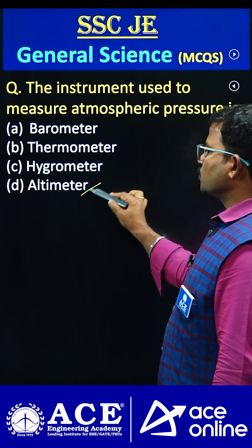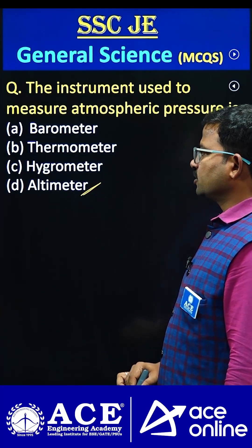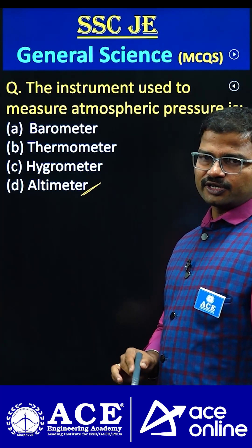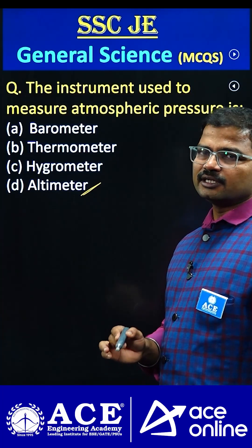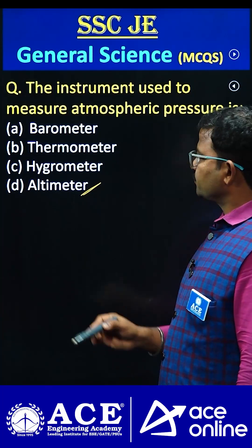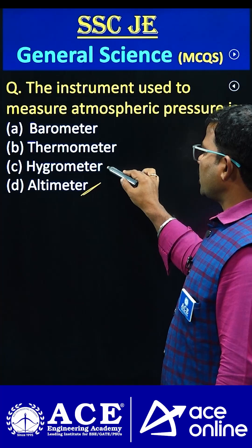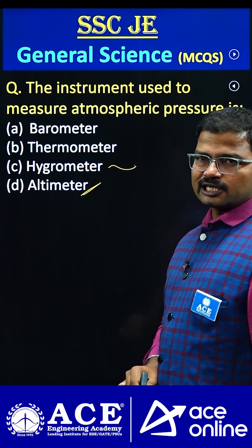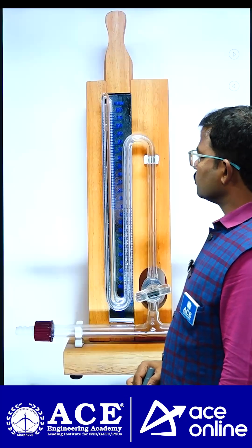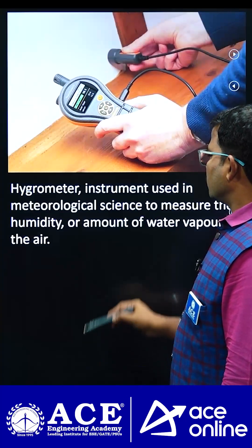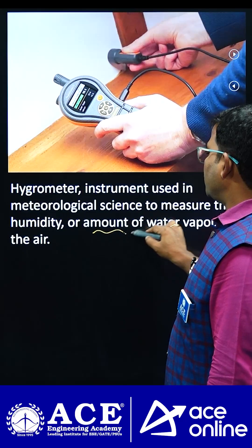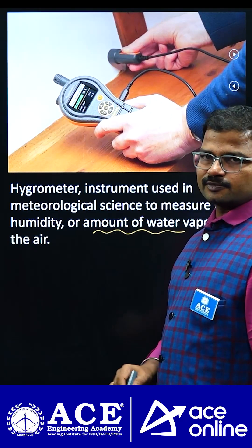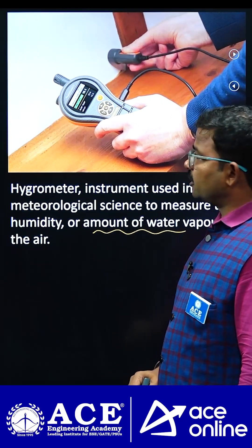Generally, altimeter is used to measure the altitude of different objects which exist in the atmosphere. Next, hygrometer — it can be majorly utilized by the meteorological department to study humidity, or the amount of water vapor in the air.